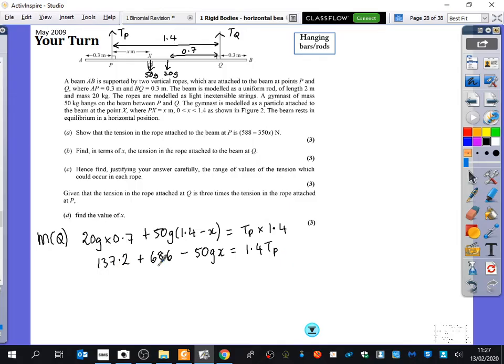So if I add these together and then divide it by 1.4, you get 588 and then if I do 50g divided by 1.4, you get minus 350x, which is what they wanted.